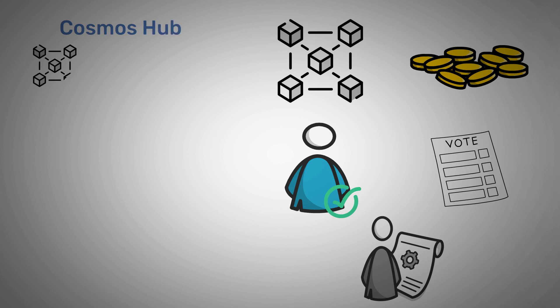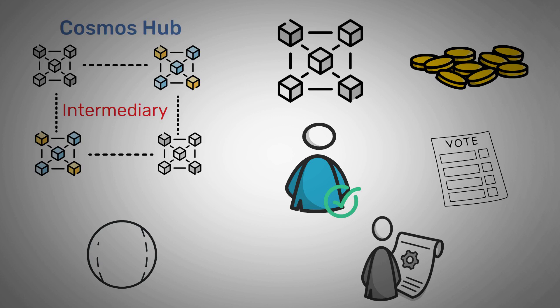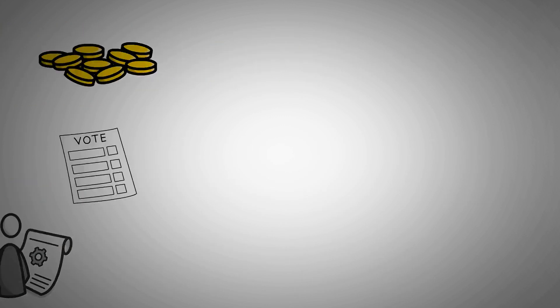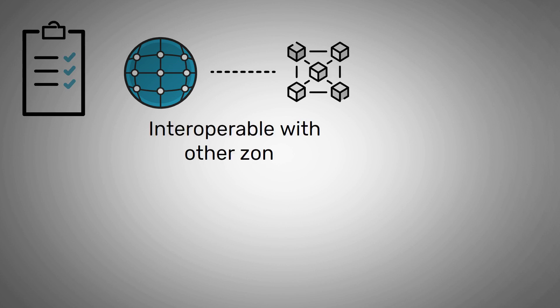The Cosmos hub is where all these blockchains meet. This protocol functions as an intermediary. Every zone in the network connects directly to the hub. The hub then maintains a constant record of the current state of the zone. Once a zone is connected to the Cosmos hub, it's interoperable with every other zone in the network.